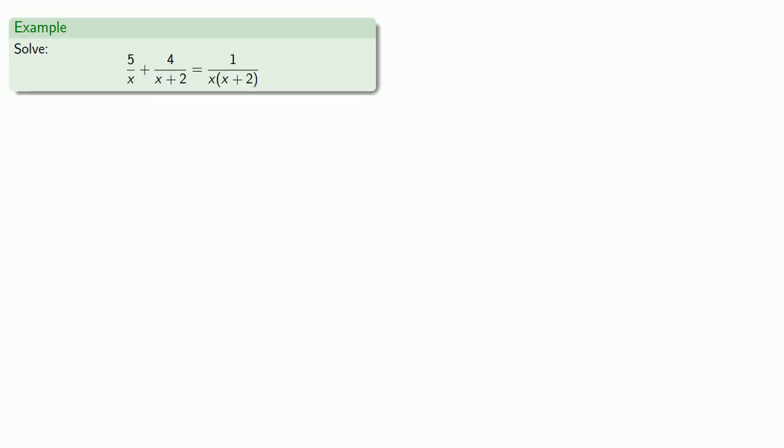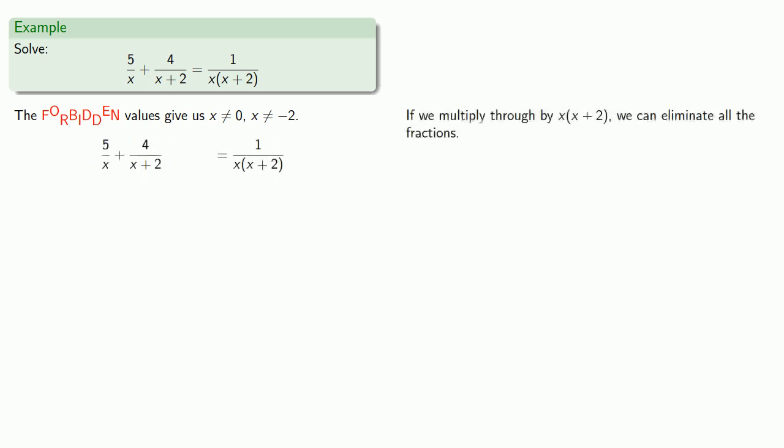So again, any time you have a rational expression, the very first and most important thing you do is identify what is forbidden. And so we find that x cannot be 0, and x cannot be negative 2. And now we can get rid of the fractions. If we multiply through by the common denominator, x times x plus 2, we can eliminate all of the fractions.